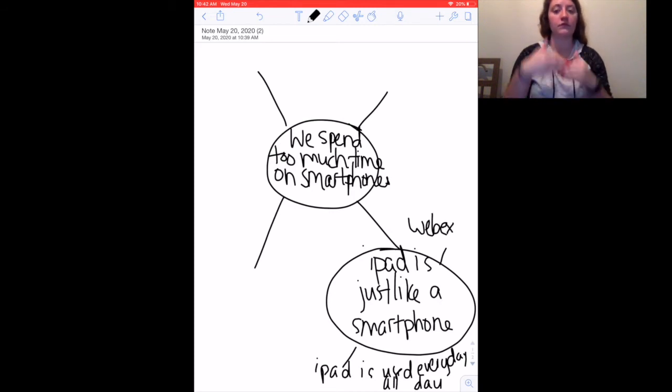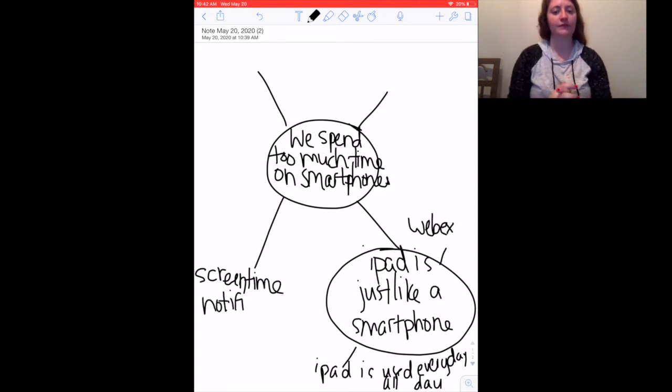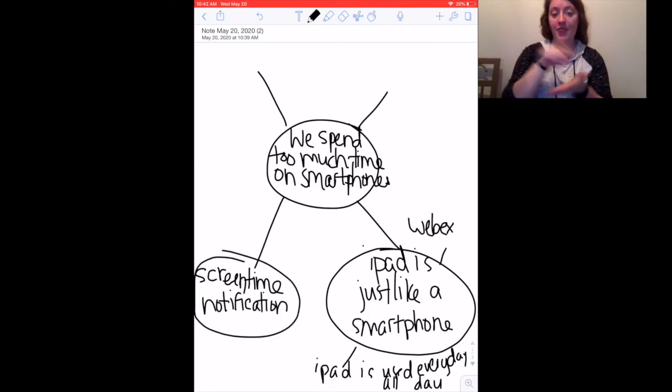And then I might also say, I'm trying to think of other things that could defend my ideas about how we spend too much time on smartphones. Well, something that pops up every Sunday for me is my screen time notification. I wonder if any of you get that too, where it tells you weekly what your screen time is. And I can tell you that that is a good indicator that I'm spending too much time on my phone. I think last time it was saying that I was averaging like two hours a day on my phone. So I'm going to write that down.